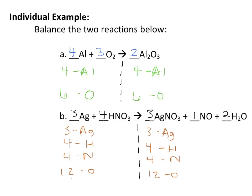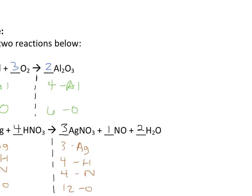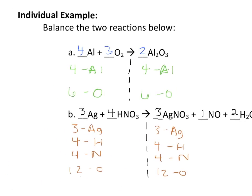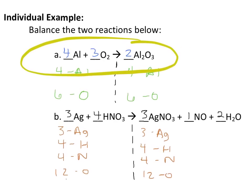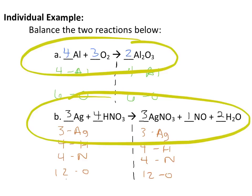Just to check your work on these two individual examples. Our final coefficients for number 1, or A, are 4, 3, and 2. And our coefficients for B here are 3, 4, 3, 1, and 2.